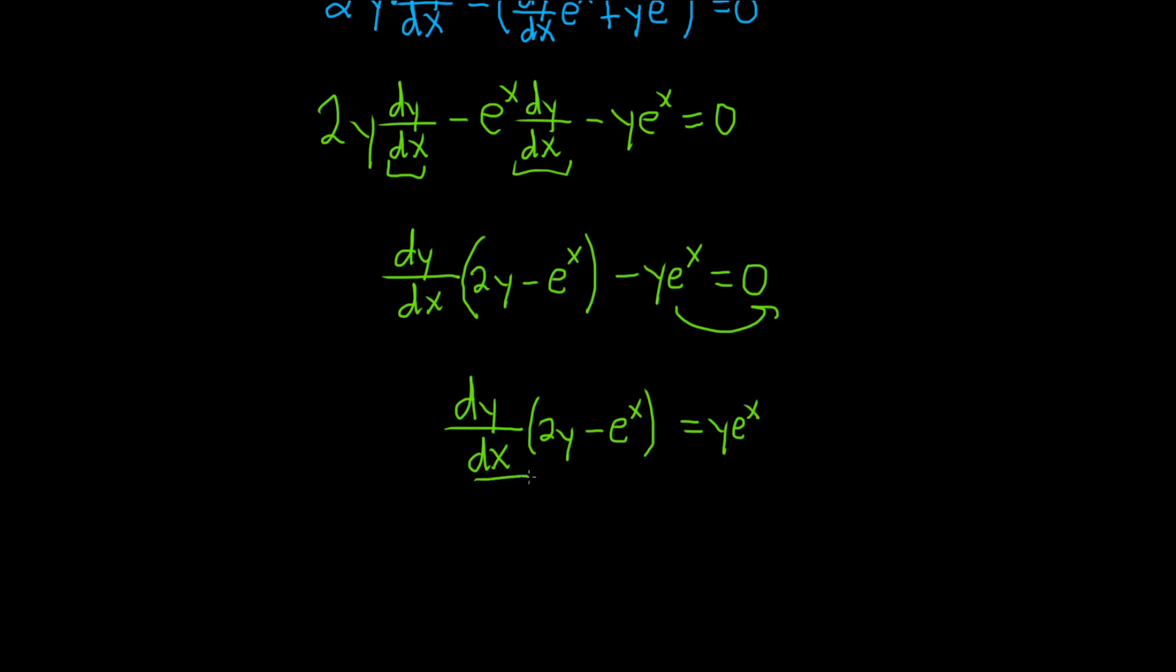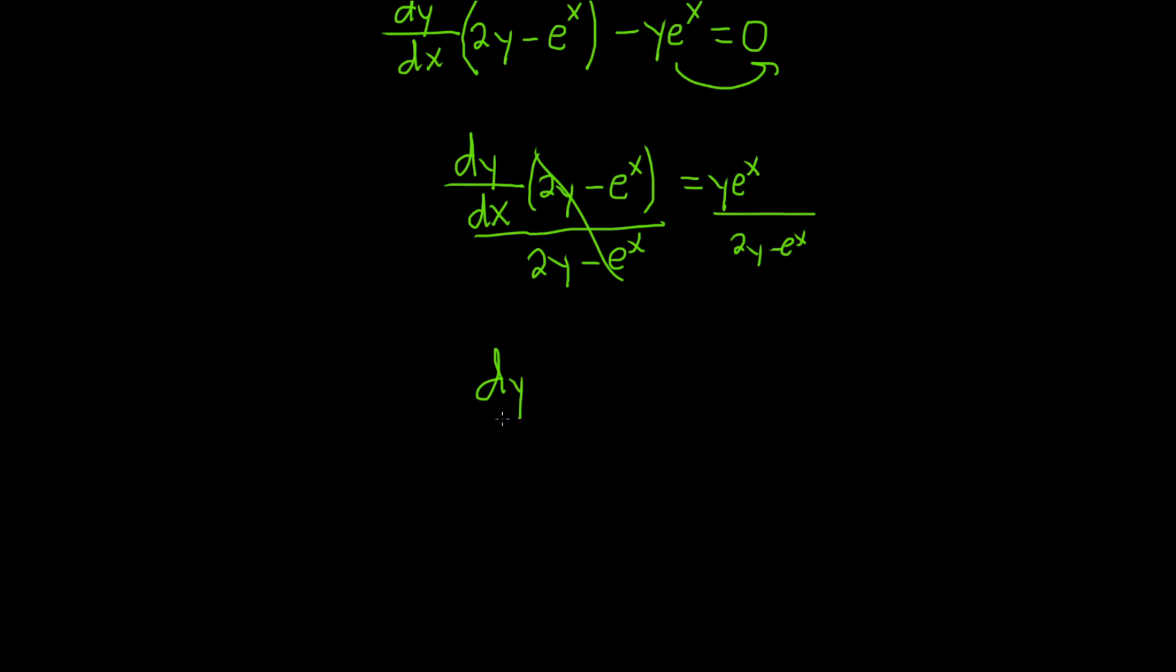To finish, we'll just divide by all of this. We can do that because it's being multiplied. So 2y minus e to the x over 2y minus e to the x. So we have dy/dx equals y e to the x over 2y minus e to the x. And that would be the final answer.